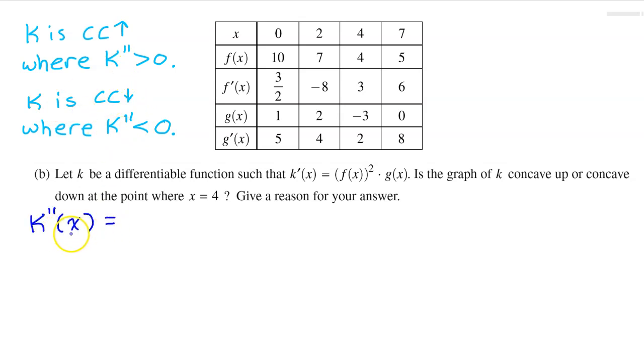To find an expression for k double prime, we need to take the derivative of k prime. This is going to require the product rule and inside of that the chain rule. Let's start with the product rule. I am viewing k prime as this yellow function times this blue function. According to the product rule, the first time through, you take the derivative of this yellow function. So I'm going to do that now. But taking the derivative of f of x squared requires the chain rule, which says that first you take the derivative of the outer function.